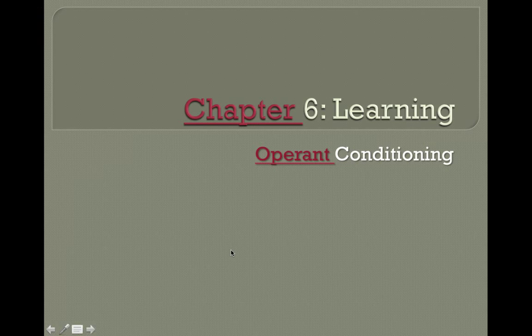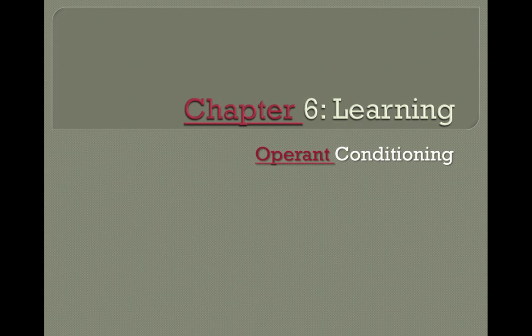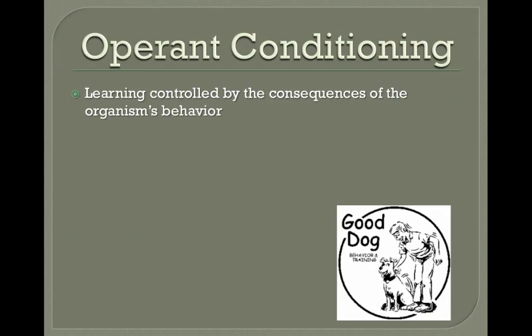Whereas classical conditioning is about the pairing of two stimuli together, operant conditioning is learning that is controlled by the consequences of the organism's behavior. This is learning that is influenced by what comes after the behavior. If something favorable happens after the behavior, that behavior is likely to increase. If something unfavorable happens after the behavior, that behavior is likely to decrease.